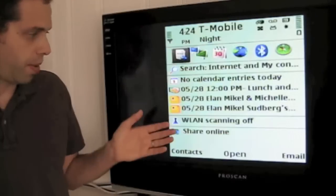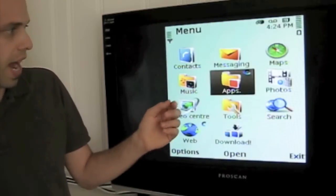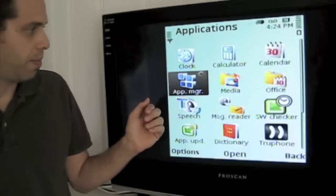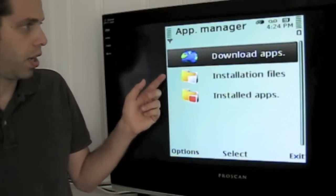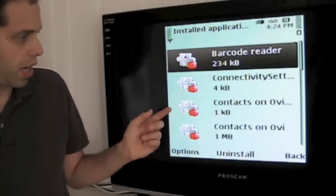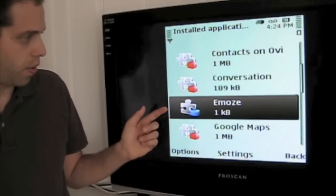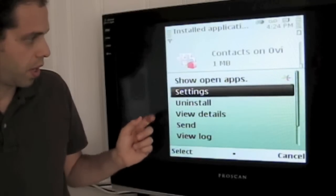Here's a little trick we'll do. From the home screen, you go menu. Go to Apps, Application Manager, Installed Apps. Now we'll scroll down to Emos, Options, Settings.